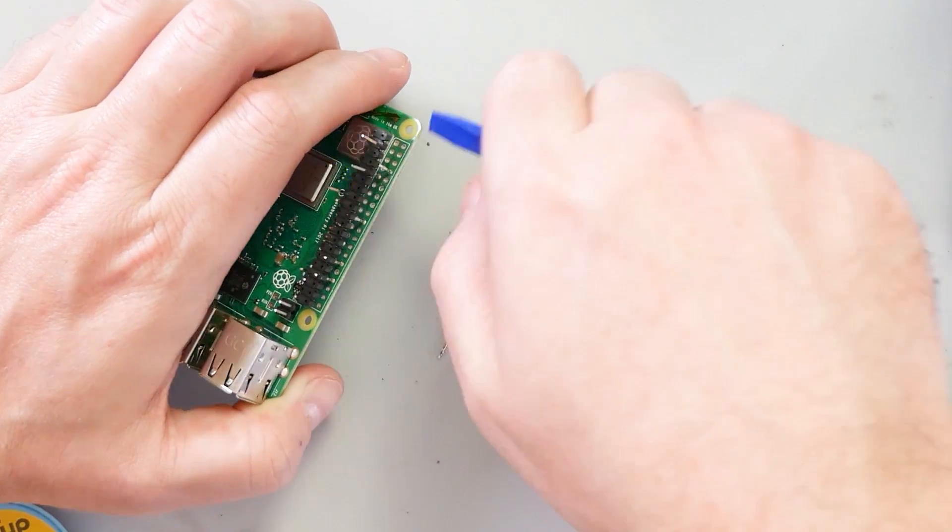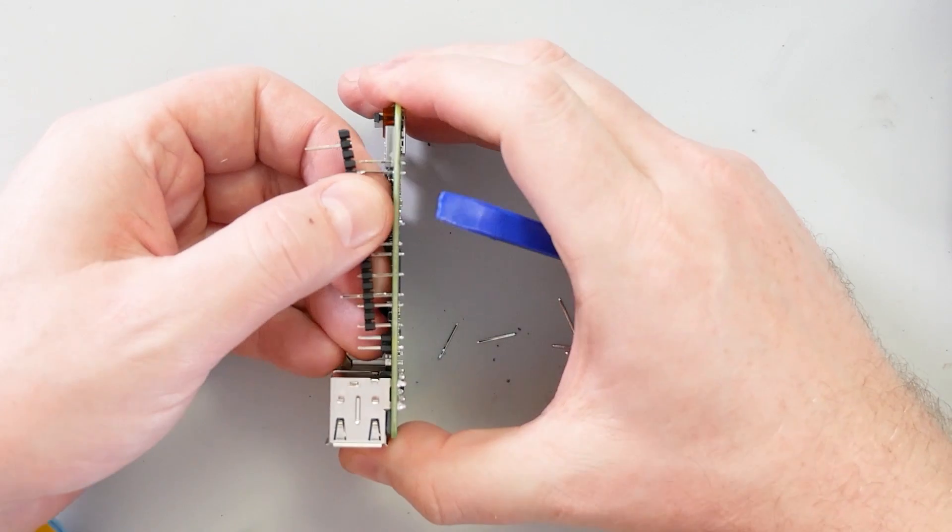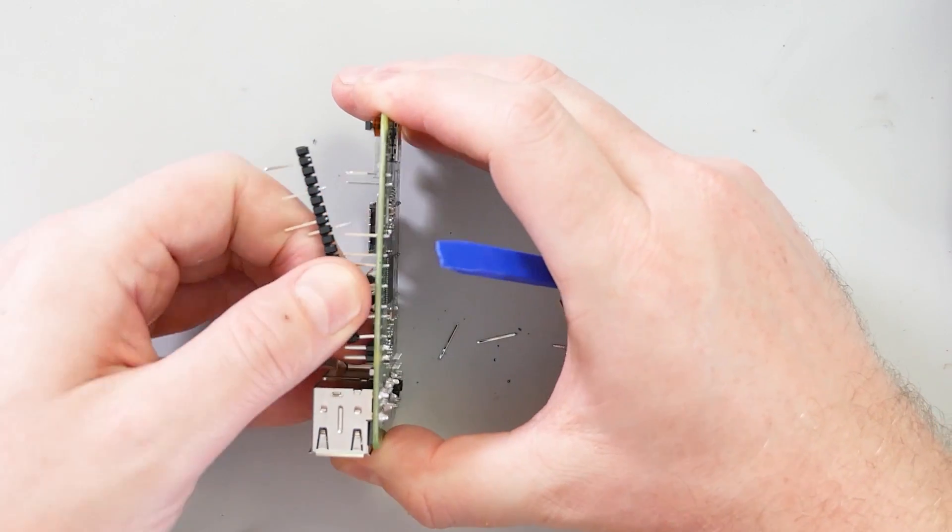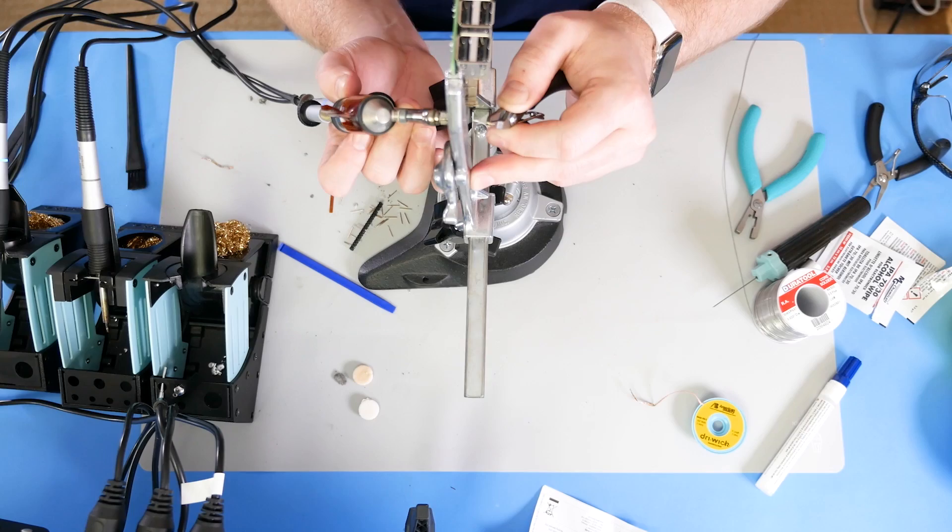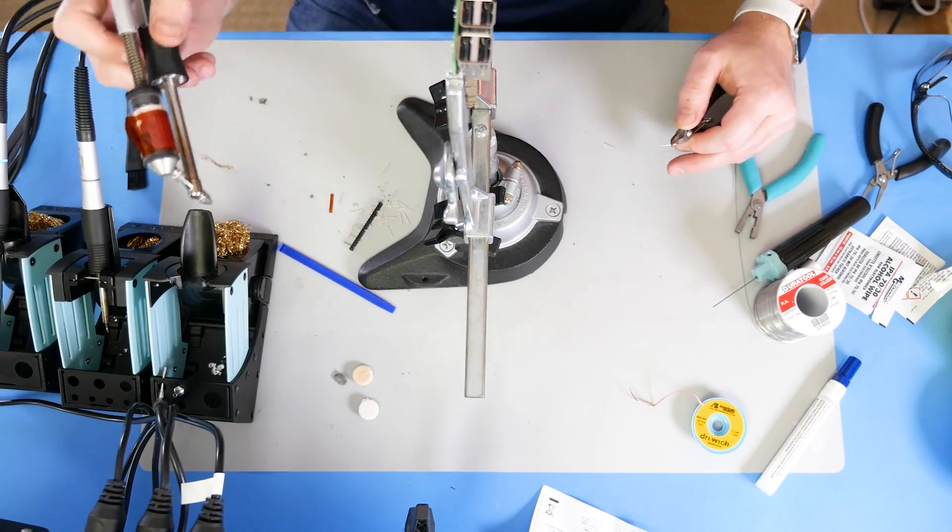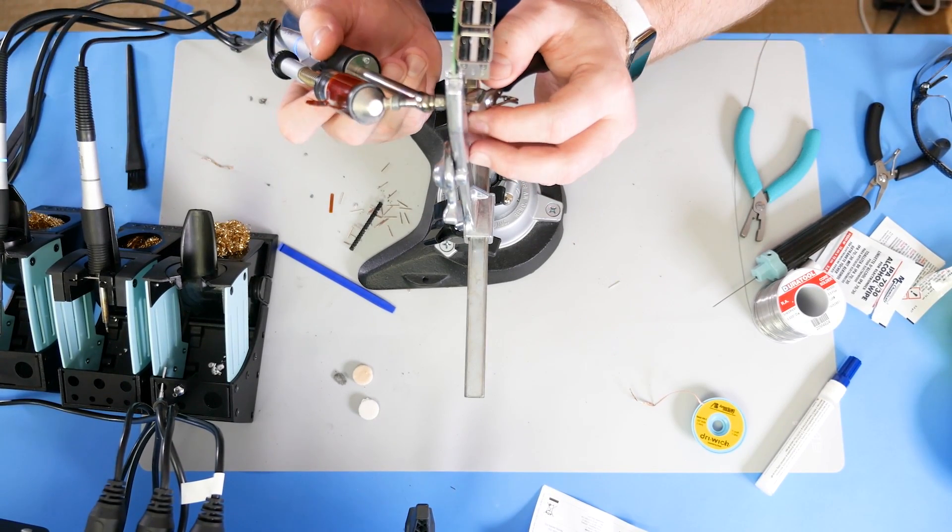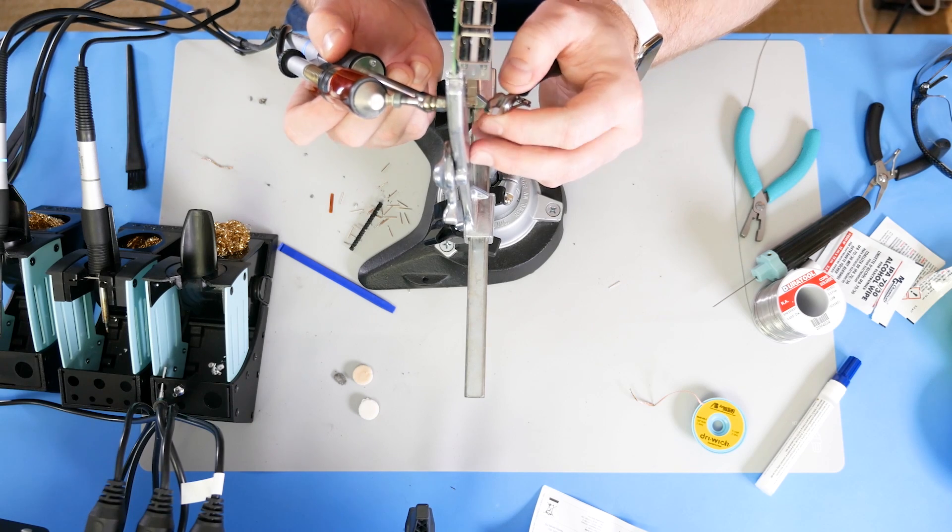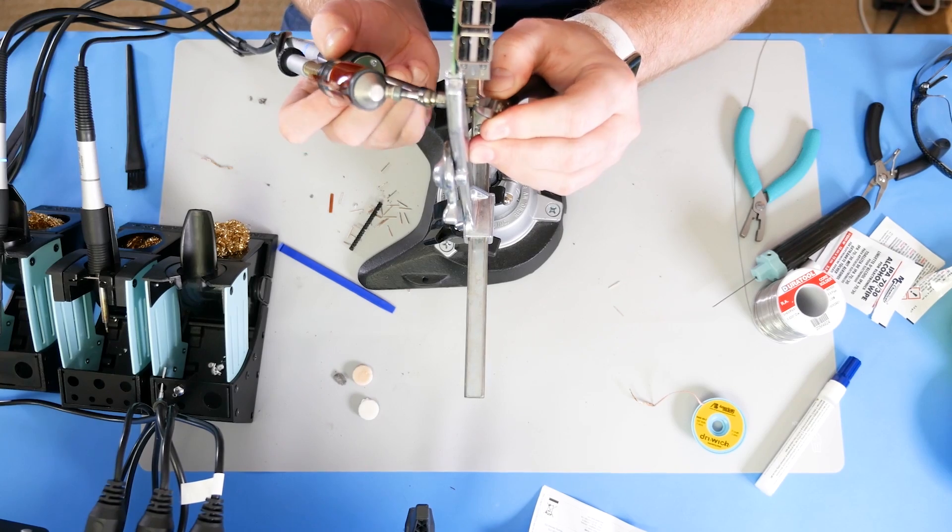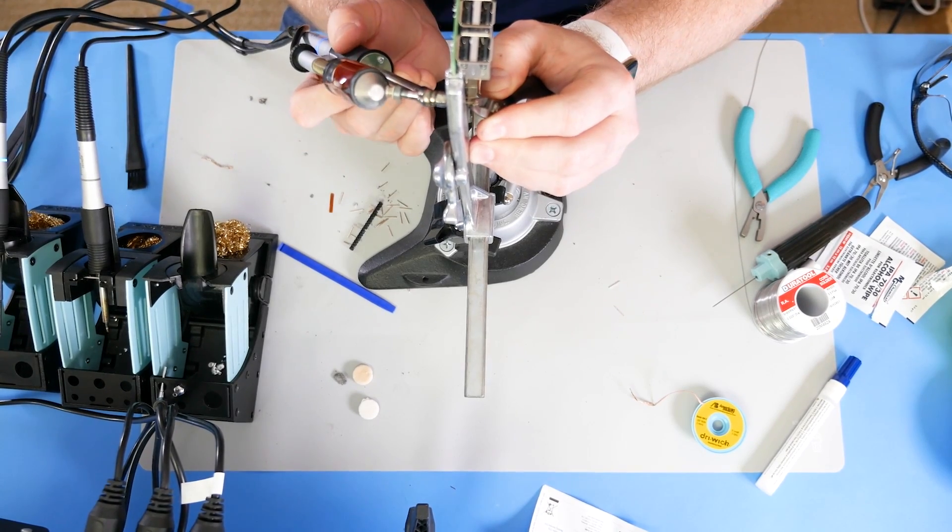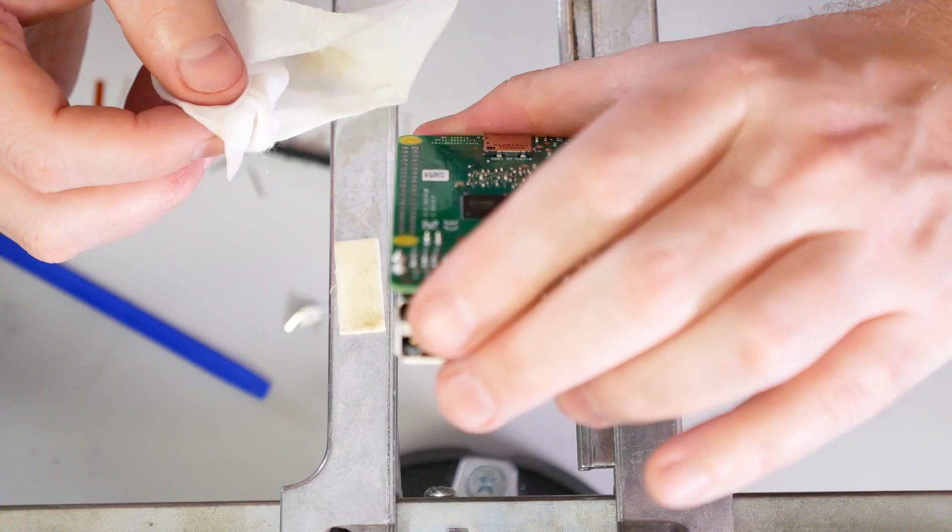As you can see, I wasn't able to remove the entire header pin block without damaging it. But more importantly, I am not damaging the Raspberry Pi. With the plastic retainer off, I used a vertical position to remove the pins one at a time. Now, you could use a soldering iron to heat up the joint and pull the pin out. I kept using the desoldering tool so that the holes would not be filled with leftover solder.